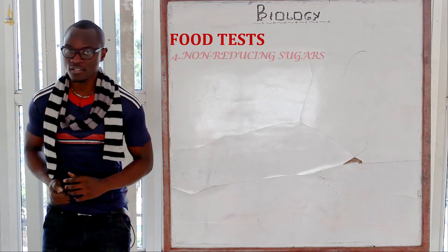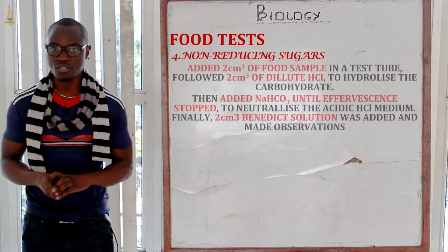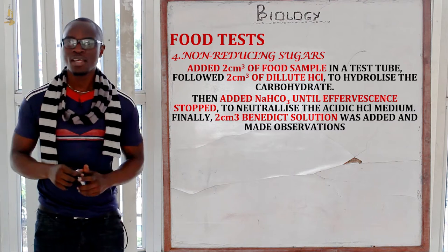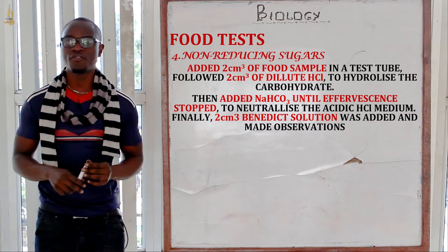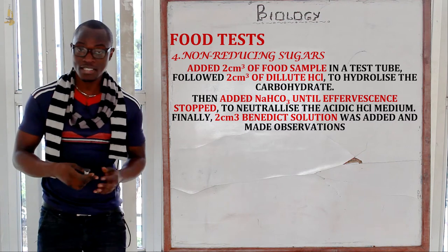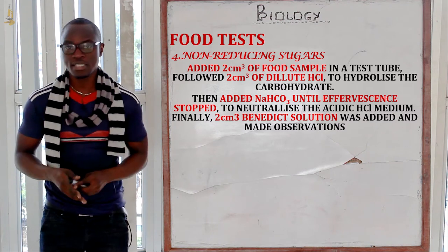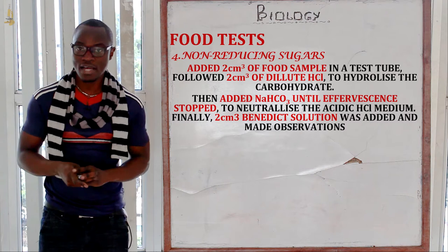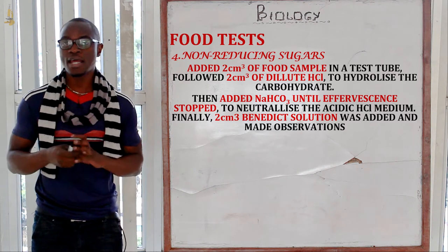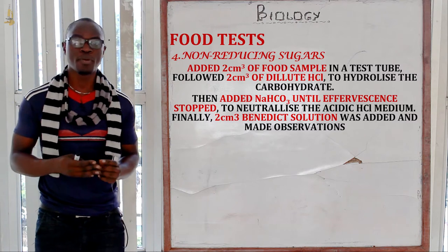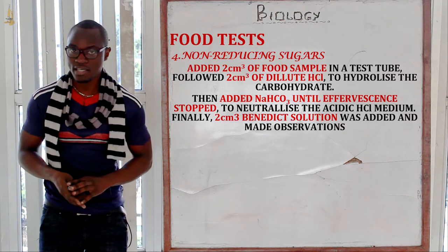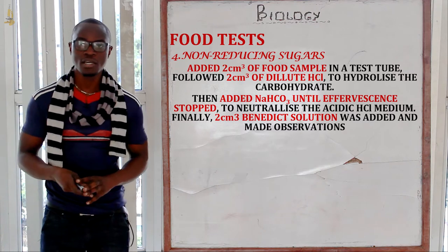Now let's look at the next food test which is non-reducing sugar. So how do we test for non-reducing sugar? We take the food sample and place it in the test tube, then we add one or two centimetres cubed of hydrochloric acid. We add hydrochloric acid so as to break down the monosaccharides inside the disaccharide in the non-reducing sugar.